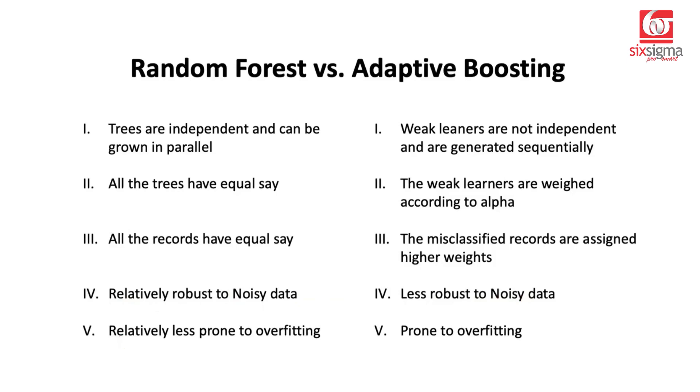And the last point, random forest is relatively less prone to overfitting. It does overfit, but compared to adaptive boosting it is relatively less prone to overfitting. Whereas in case of adaptive boosting, since you are giving higher weightage to the misclassified records, you're likely to overfit. Which means it is quite possible that your training performance is not retained on the test set.